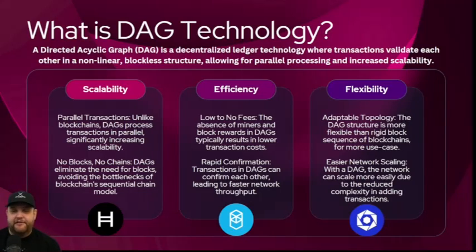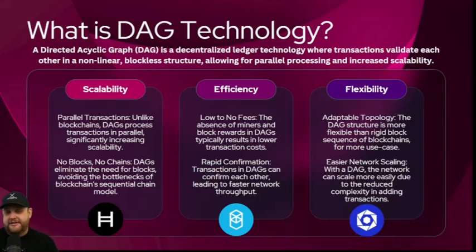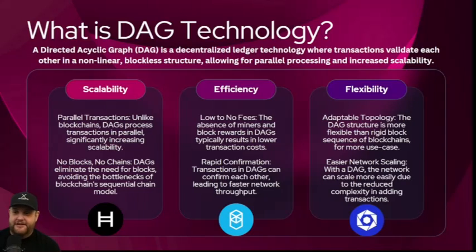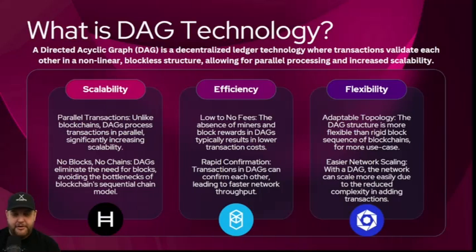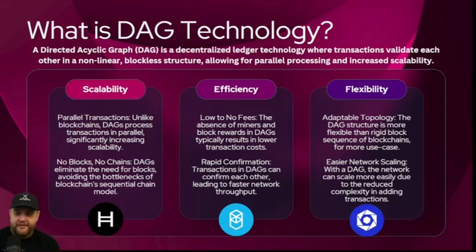DAGs are efficient with low to no fees. The absence of miners and block rewards in DAGs typically results in lower transaction costs, though that also depends on the type of blockchain and how it's built. Most DAGs have rapid transaction confirmations — DAGs confirm with each other, leading to faster network throughput.